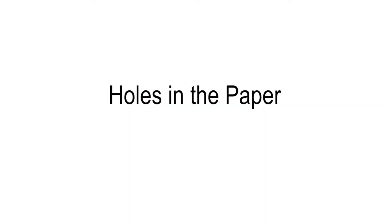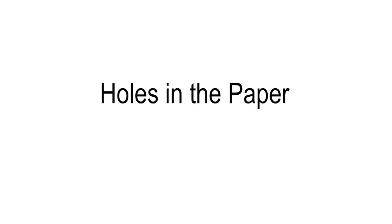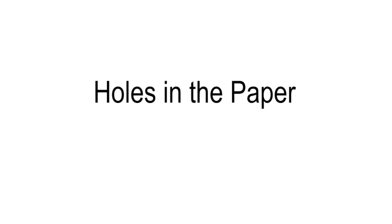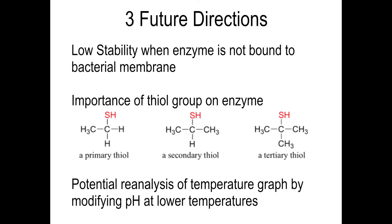Though this paper does a great job identifying the structure of this new beta-galactosidase enzyme and shows its pH and thermal stability, there are a few gaps worth elaborating on. The first gap is that this enzyme has low stability when it is not bound to the cell surface as in the in vivo model, meaning it is not a well-secreted enzyme. This is a roadblock because it makes the enzyme more difficult to use for industrialized processes to remove lactose from milk products.